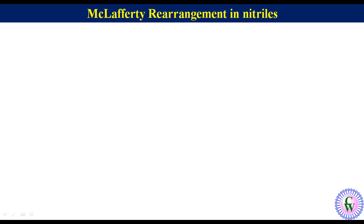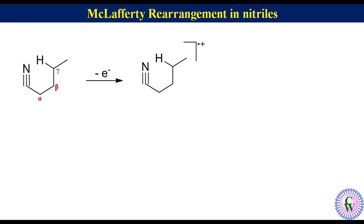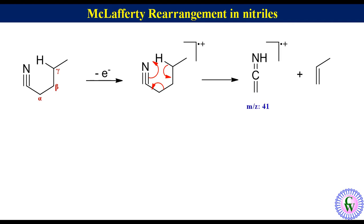McLafferty rearrangement in nitriles. Nitriles with gamma hydrogen also undergo McLafferty rearrangement. For example, pentanenitrile — it has gamma hydrogen. Removal of one electron from it gives a radical cation which after McLafferty rearrangement will give another radical cation and propene. The m/z value of this radical cation will be 41.